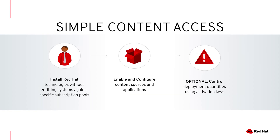The other portion of our portfolio is a capability called Simple Content Access. Simple Content Access is designed to streamline the experience when using Red Hat products. Traditionally, when you build a RHEL system, you build it, register it to our customer portal or satellite, do a complex set of setup to ensure it has the correct subscription, then enable repositories and install the software. With Simple Content Access, there is no longer a requirement to attach an entitlement to a system in order to get access to content. Simply register the system, enable the repositories, and install the products you want.